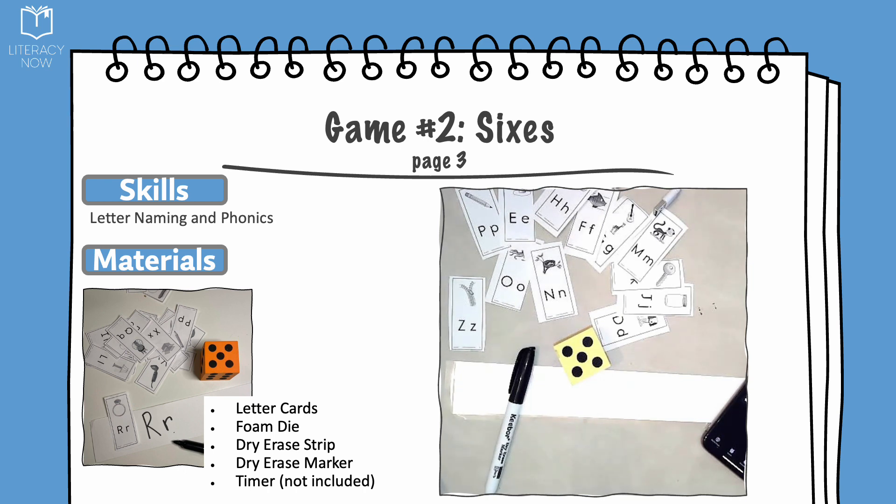Roll the foam die. If you roll a 1 through 5, take a card from the pile. Say the letter name out loud. Write the letter on the dry erase strip and roll again.